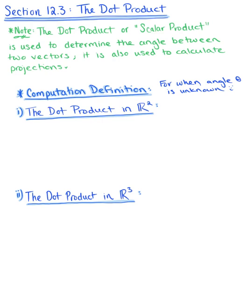In section 12.3, we are exploring the dot product. So this is the first of two multiplication operations with vectors. And the dot product, also called the scalar product, is the multiplication operation of two vectors that produces a scalar-valued result.